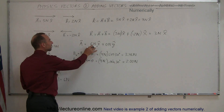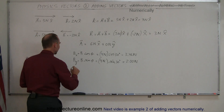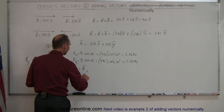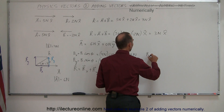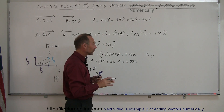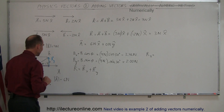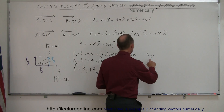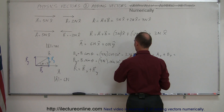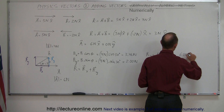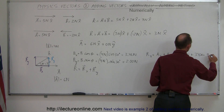Now we have the x and y components of vector A and vector B, so we can sum them together. The x-component of the resultant, R sub x, equals A sub x plus B sub x. The A vector points to the right, and the x-component of B also points to the right, so both are in the positive x-direction. R sub x equals 6.00 Newtons plus 3.46 Newtons, which equals 9.46 Newtons.